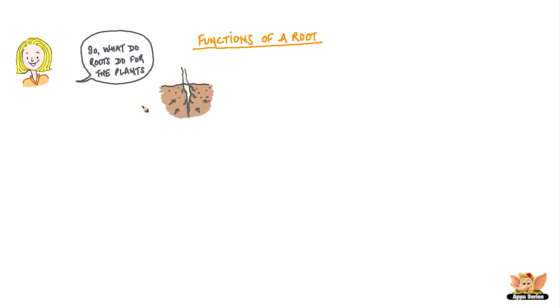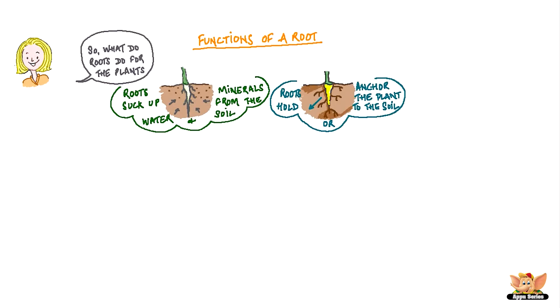One of the main functions of roots is, roots suck up water and minerals from the soil. Roots also anchor or hold the plant to the soil. If the wind blows too hard, roots keep the plant from falling over.